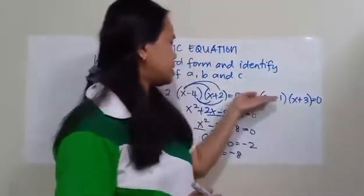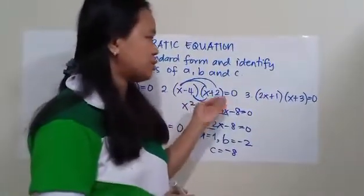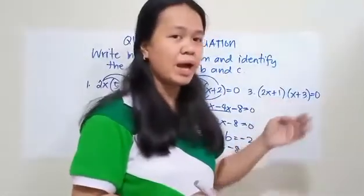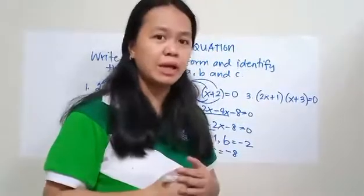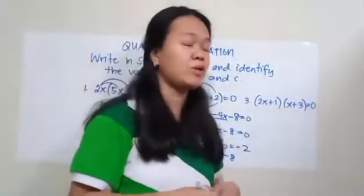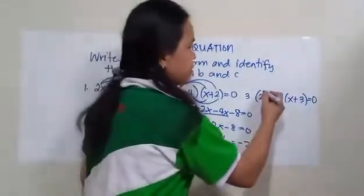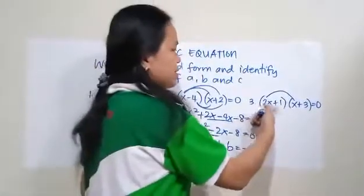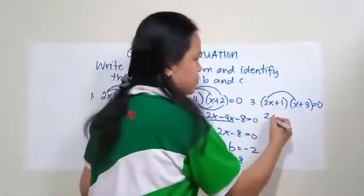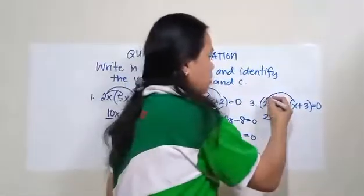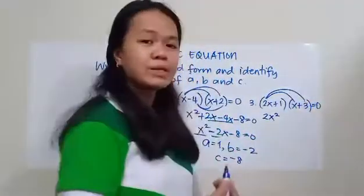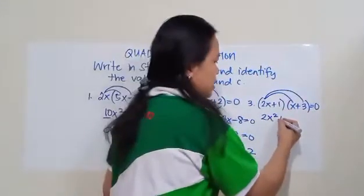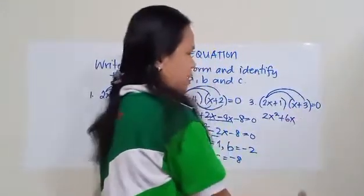So number 3 is actually similar to number 2. So to write this one in standard form, we have to use the FOIL method again. So we have to multiply the two binomials. So multiply first the first terms. So 2x times x is 2x squared. Then multiply the outer terms. 2x times 3. So that is 6x.